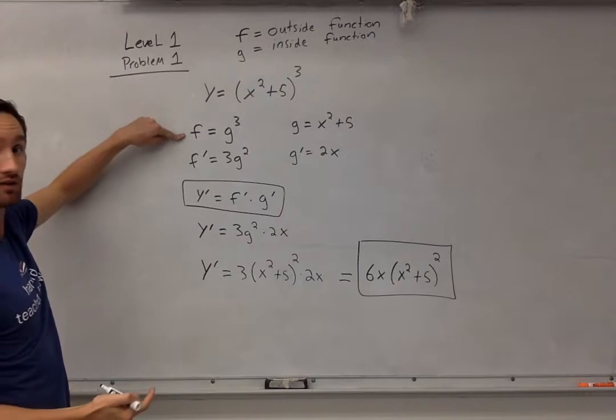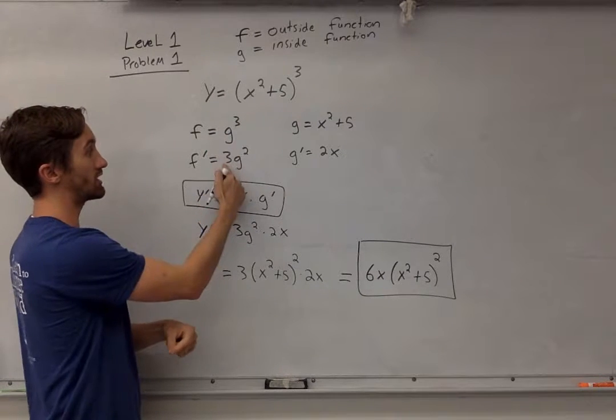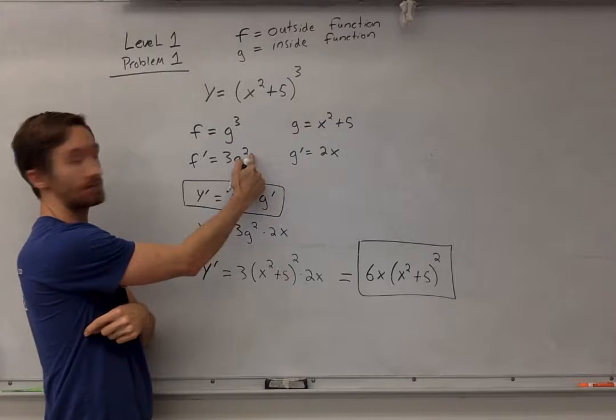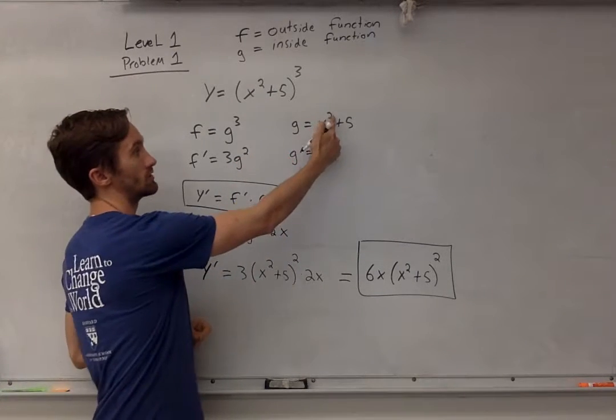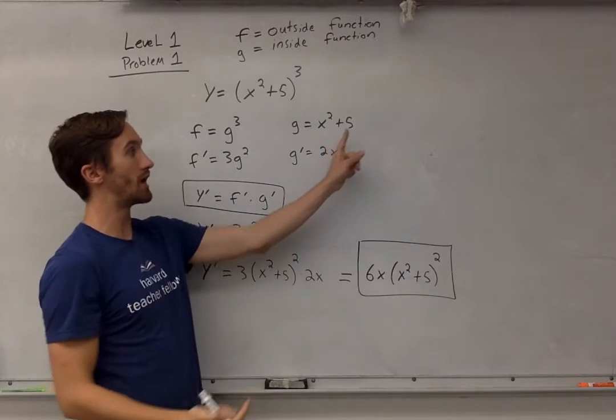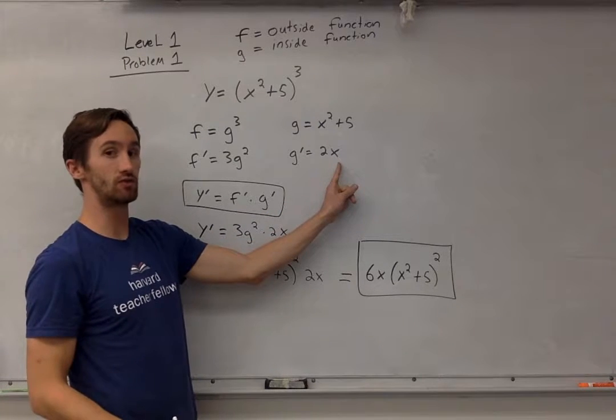I'm going to take the derivative of f. It's the power rule, so I multiply the 3 in front: 3g². Then over here, I'm going to do the power rule again. 2 gets multiplied in front and then subtracted, so it's 2x. When we do the power rule, constants go away, so I just have 2x.